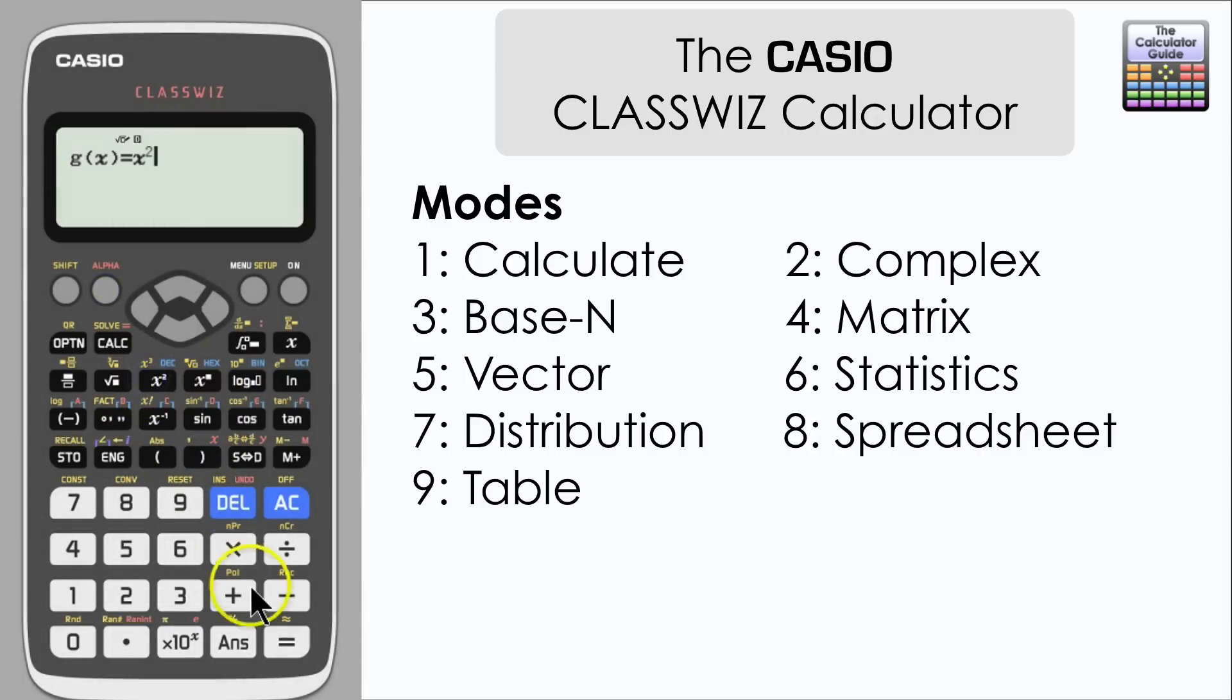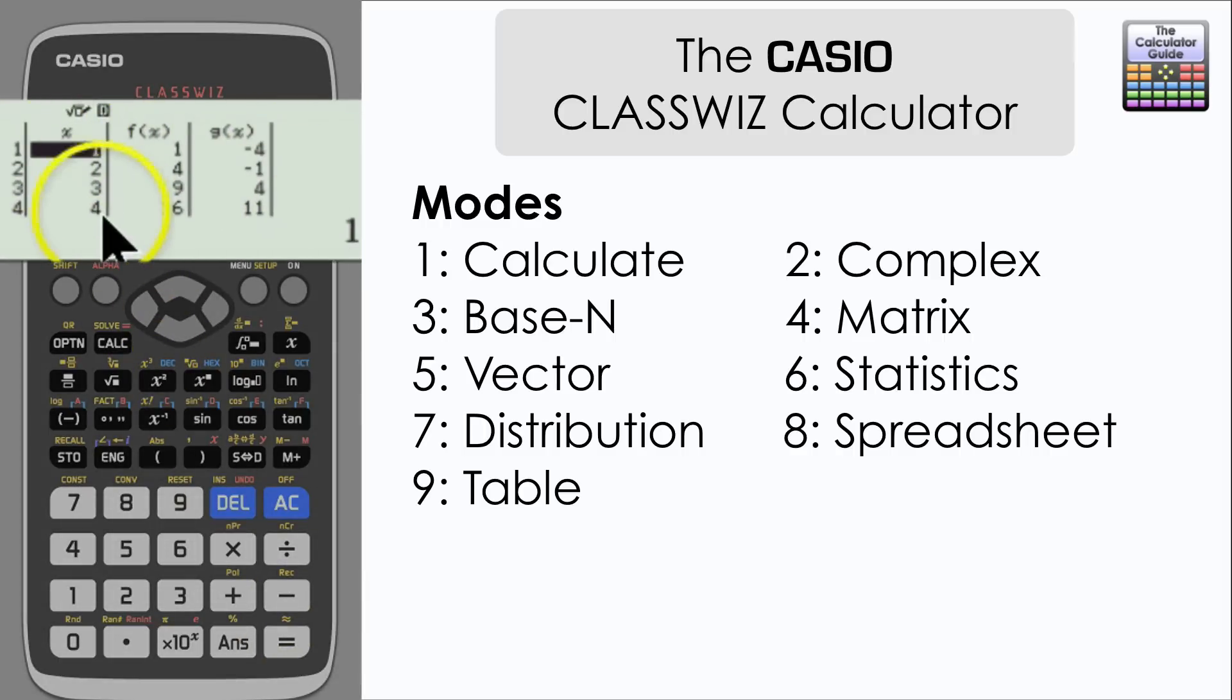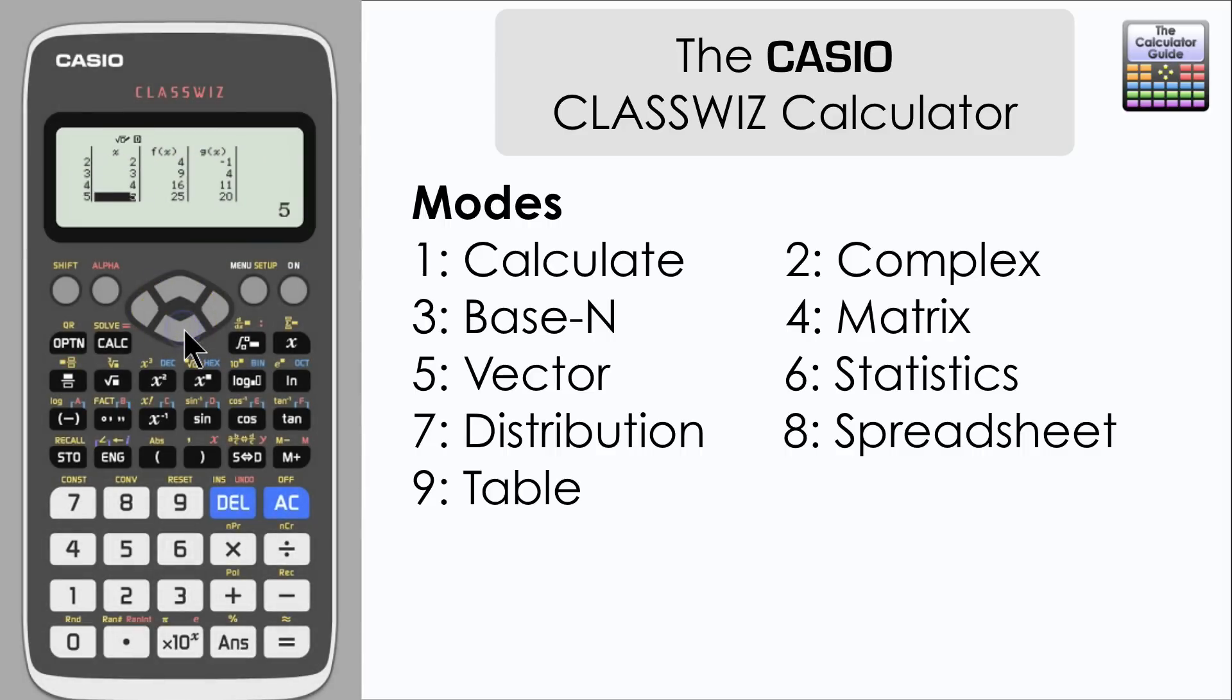And what I'm going to do is compare two functions here. I'm going to input X squared and X squared minus 5. I'll just keep the start, end, and step as default. And then it's brought up a table here where we can actually compare two functions of X. Which of course can be very useful when we're looking at transformations of functions.